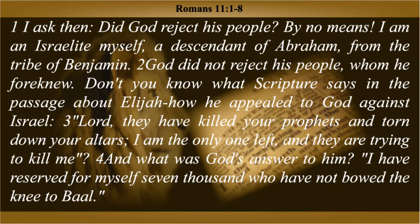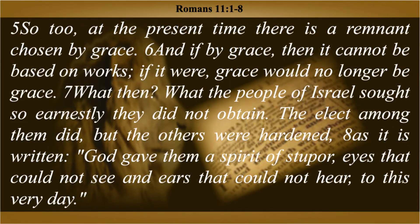Continuing in chapter 11 verse 1, Paul says, 'I ask then, did God reject his people? By no means. I am an Israelite myself, a descendant of Abraham, from the tribe of Benjamin. God did not reject his people whom he foreknew.' He references Elijah's appeal against Israel, and God's answer: 'I have reserved for myself 7,000 who have not bowed the knee to Baal.' So too, at the present time, there is a remnant chosen by grace — and if by grace, then it cannot be based on works; if it were, grace would no longer be grace.